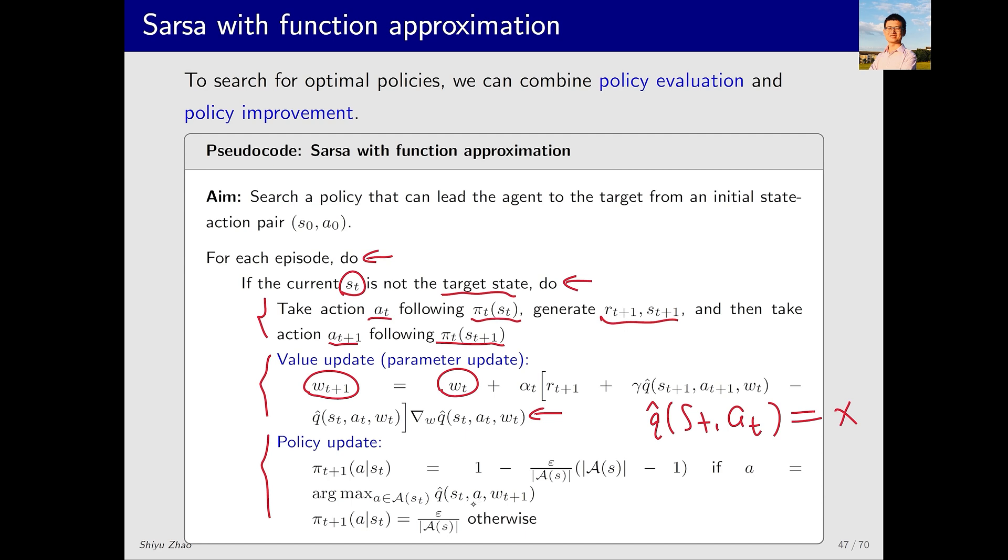Specifically, in state S_t I choose the action corresponding to the maximum Q value and assign it a higher probability. The policy here is epsilon-greedy, so that other actions will be given smaller but non-zero probabilities. It's important to note that in the tabular case I could directly retrieve a Q value by looking up the table, but now I need to compute the Q value by substituting the state S and the action a into the function and calculating the function value.